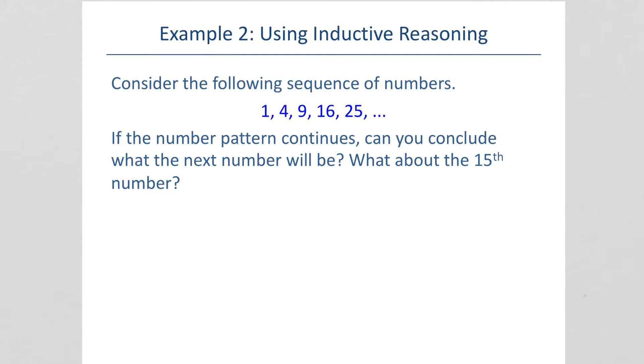Well, if we look at these numbers, hopefully you're already seeing a pattern here that these are perfect squares. 1 is 1 squared, 4 is 2 squared, 9 is 3 squared, 16 is 4 squared, and 25 is 5 squared. So the next number would be 6 squared, or 36. And I ask, what would the 15th number be? Well, if the first number is 1 squared, the second is 2 squared, the third is 3 squared, and so forth, then the 15th number would be 15 squared. That's 225.